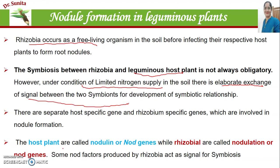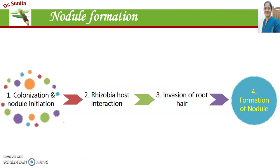The host plant has nodule genes, written as capital NOD in italics, while the rhizobial genes are written as small nod. Capital NOD refers to plant genes and small nod refers to bacterial genes. Some rhizobia secrete different Nod factors as signals for symbiosis. The major steps during nodule formation are colonization and nodule initiation.